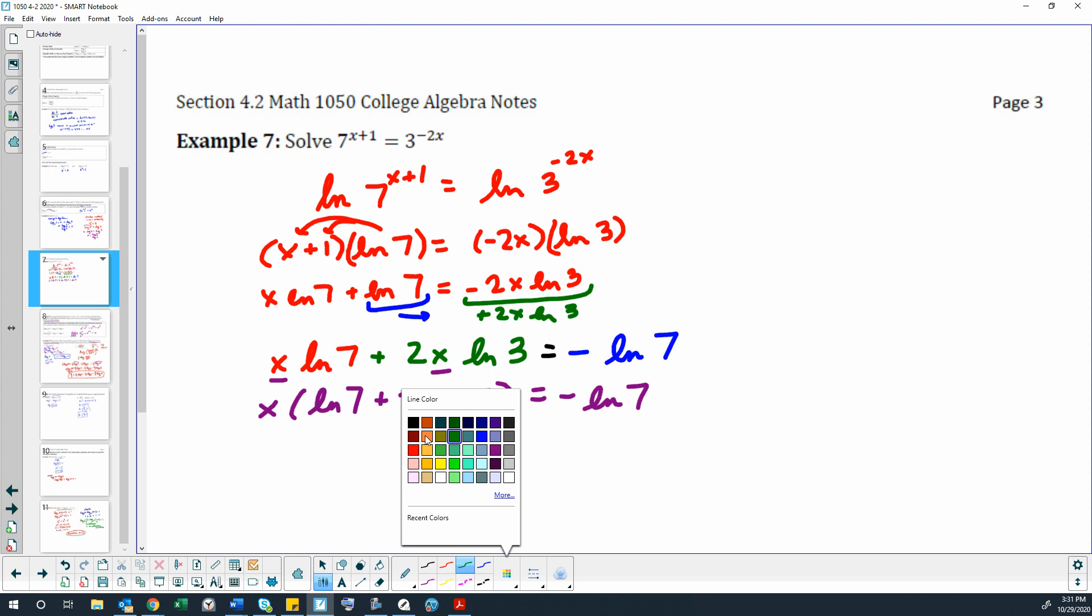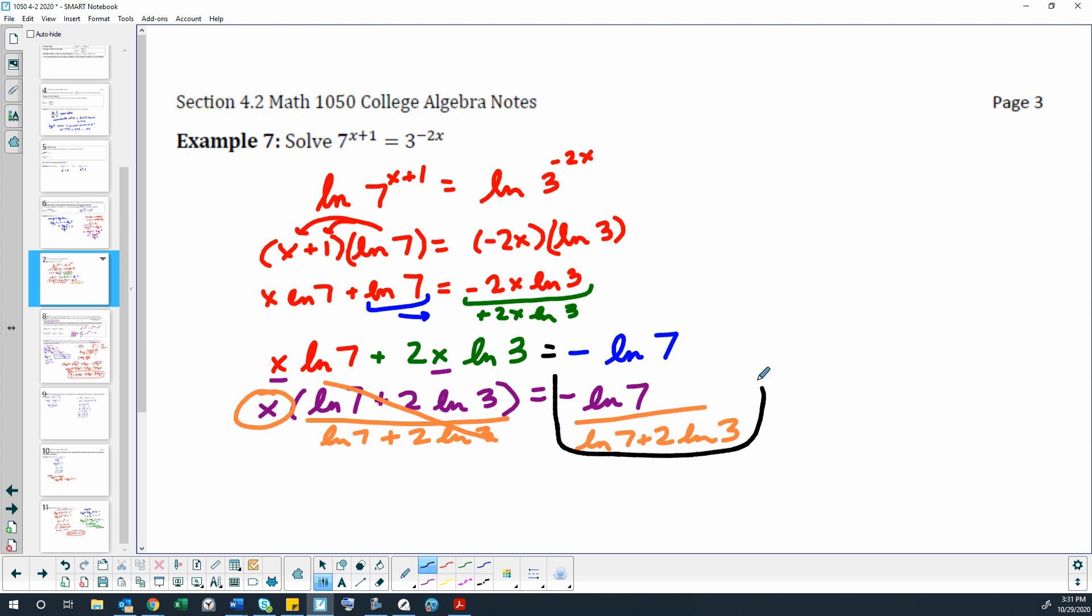This piece right here that we've arrived at—so we're going to divide by this natural log 7 plus 2 natural log 3 so that it cancels on this side, but now we have it over here: natural log 7 plus 2 natural log 3. We have now found an exact value for x. Looks really ugly, but it's an accurate exact value.